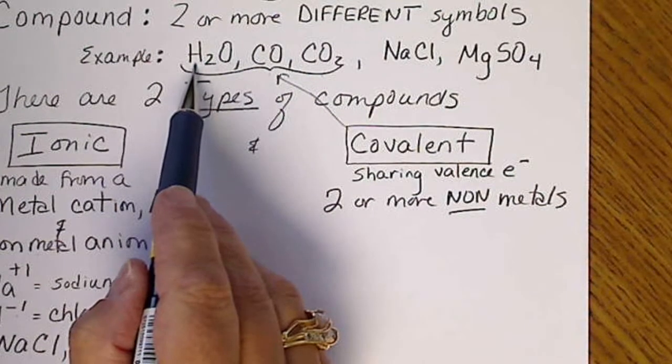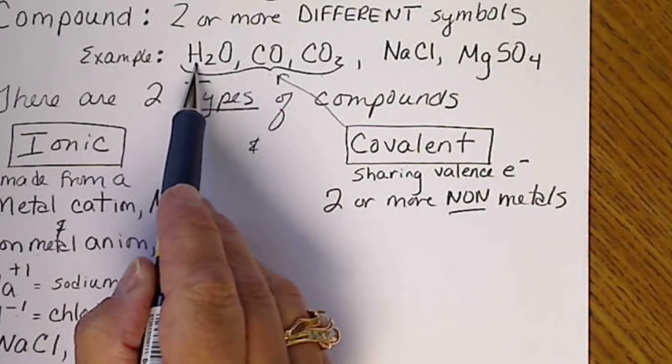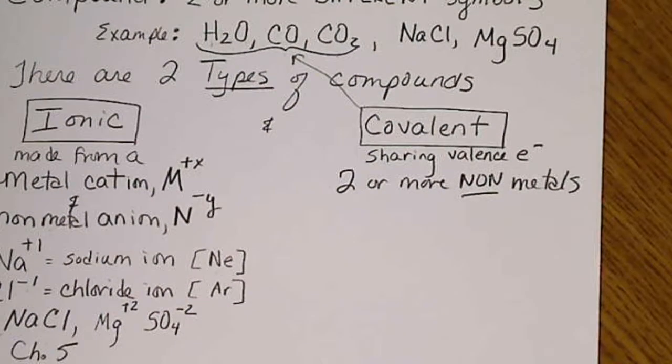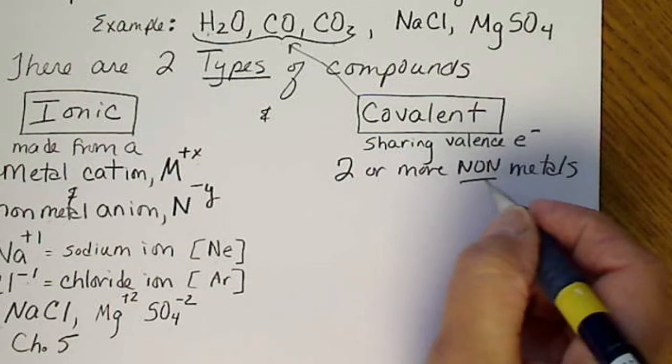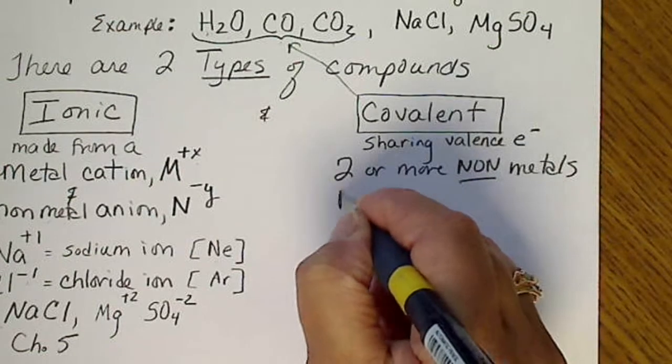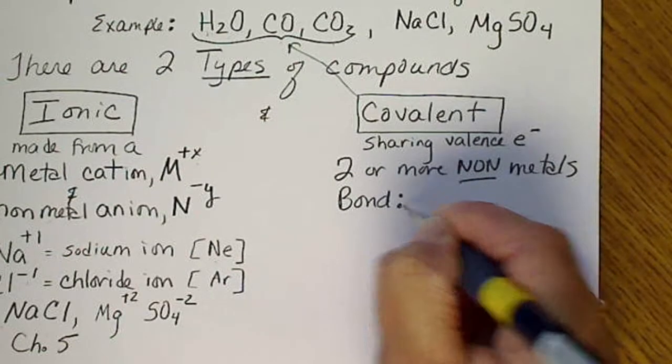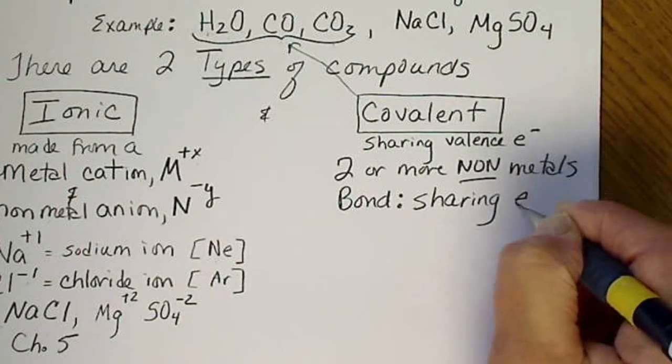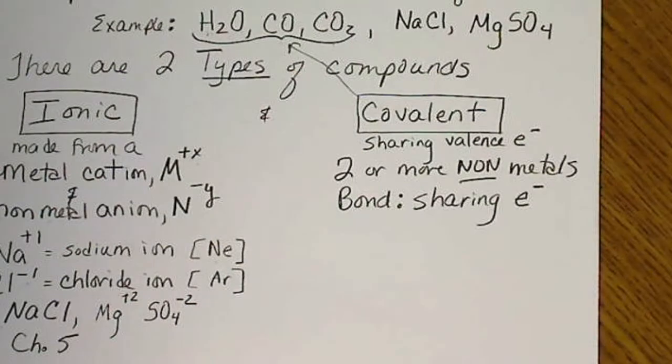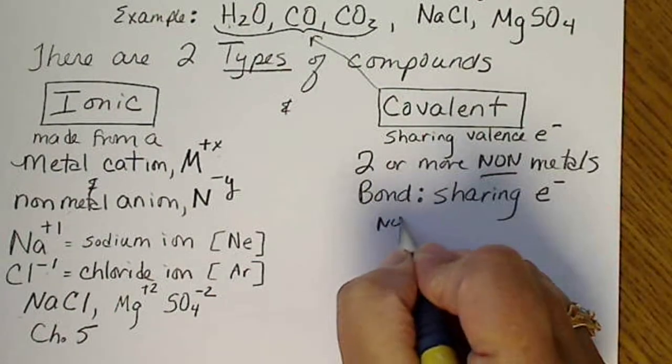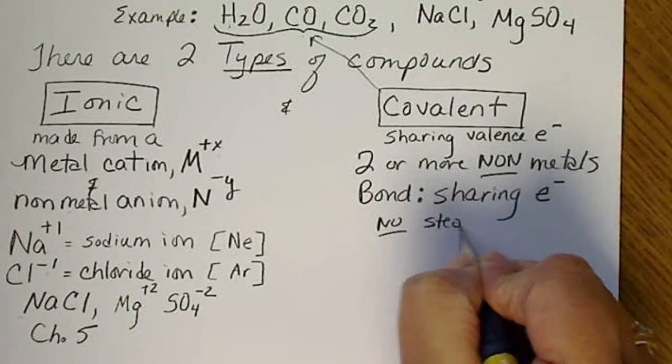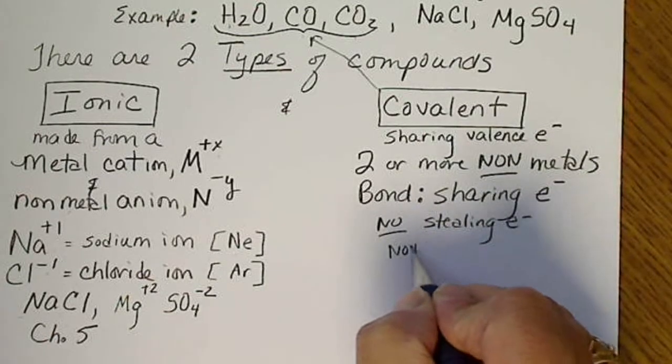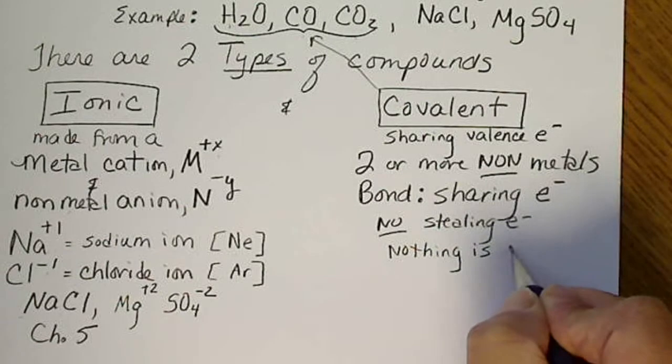You really just have to look at the first atom. If it's a metal, it's ionic. If it's a non-metal, it's a covalent compound. And these share electrons. So a bond is technically going to be sharing the outermost electrons, which are called the valence electrons. There is no stealing or losing electrons. That's not happening. And nothing has a charge in this type of compound. Nothing.